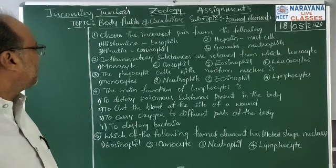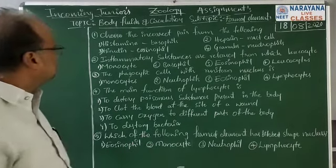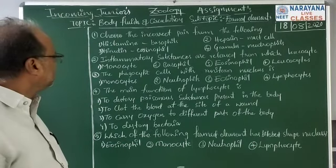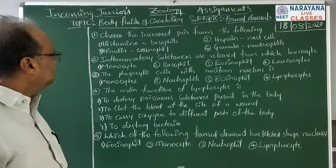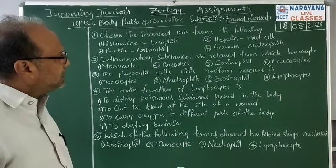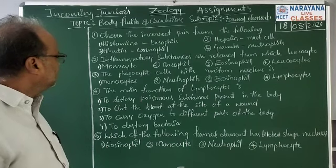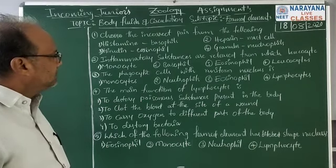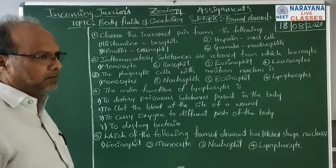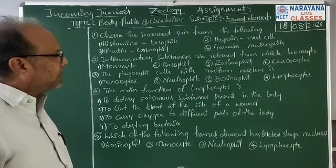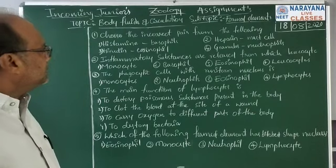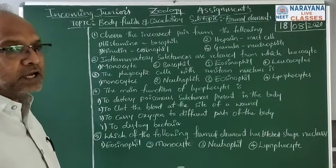Question number one: choose the incorrect pair from the following. Number one: histamine, basophil. Number two: heparin, secreted by mast cells. Number three: hirudin, eosinophils. Number four: granules of the formed elements or granular neutrophils. Among these, we have to find out which is the incorrect pair.